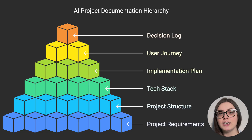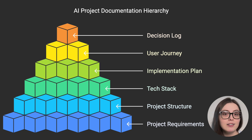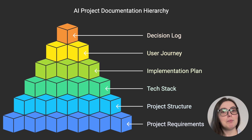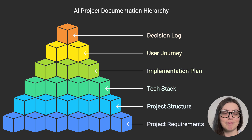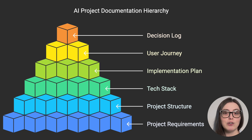A project requirements document needs to outline what we are building. A project structure works like a Google map for the AI. A tech stack lists all technology choices, specific tools, frameworks, languages, and dependencies that you need. An implementation plan is a step-by-step roadmap for building the app with specific technical guidelines. A user journey document shows how users would interact with the application. And a decision or learnings log where you can ask cursor to keep track of its learnings and decisions along the way. This technique is useful because it reduces the need to fix hallucinated code that doesn't work with our actual project.